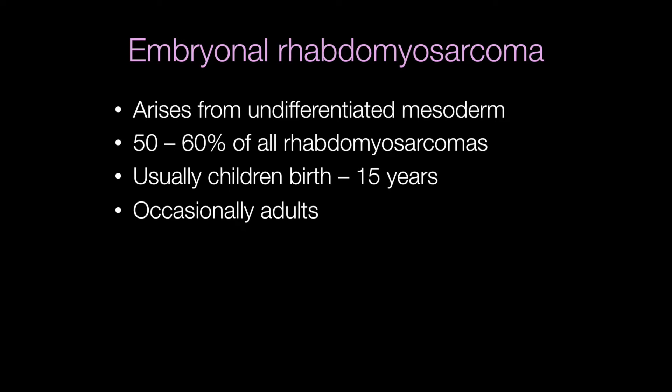Embryonal rhabdomyosarcoma is a rather primitive type of malignant tumour of striated muscle. It is usually a tumour of childhood occurring between the ages of birth and 15 years, but it does occasionally occur in adults. 50-60% of all rhabdomyosarcomas are embryonal rhabdomyosarcomas, and these tumours arise from undifferentiated mesoderm.